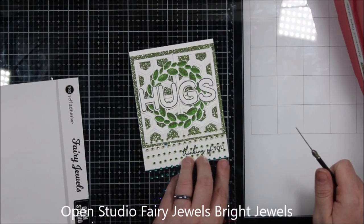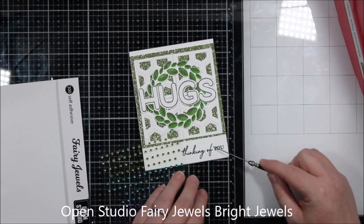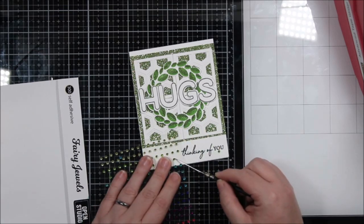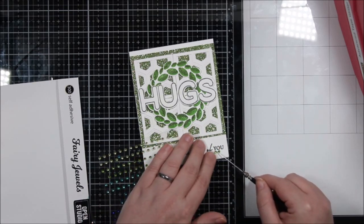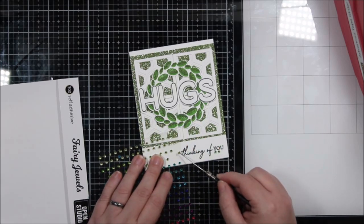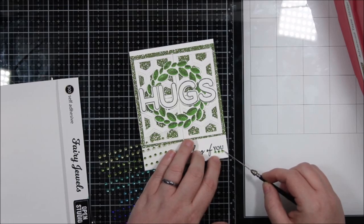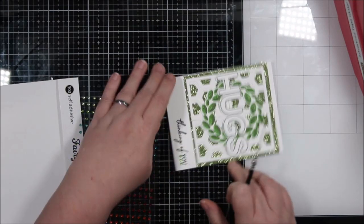Now these jewels, these fairy jewels by Open Studio, this is the bright jewels collection. They match these papers. Like this green is the same exact green, it's so pretty. I thought it would look really nice to add three gems underneath the word you just to kind of underline them and make sure that I brought that green, that light green, down to the bottom.